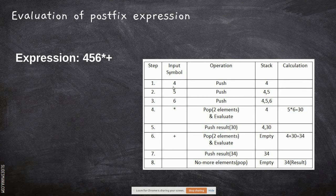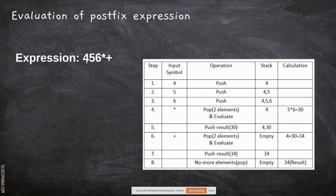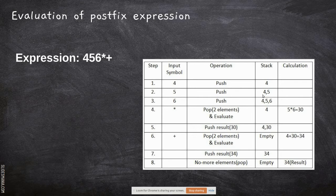We are going to scan character by character from left to right. The first input symbol scanned is 4. According to the algorithm, it is an operand, so just push it onto the stack. The next character is 5 — again an operand, so push it. Now the stack has 4 at the bottom and 5 on top.